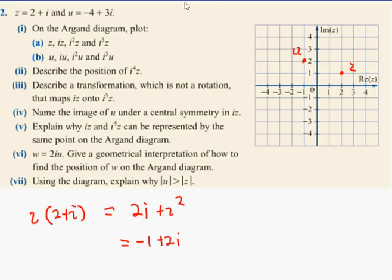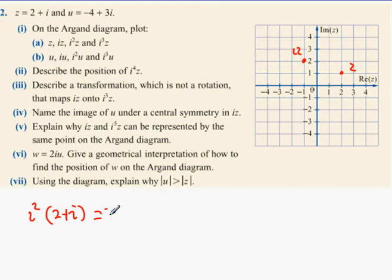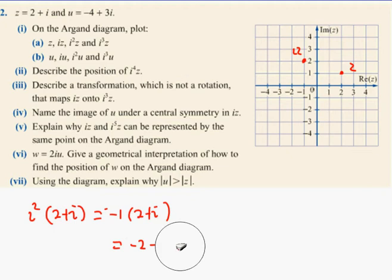Then we have to do I squared Z. I squared is, as we all know, minus 1. So it equals -1 times (2 + i), which is going to give me -2 - i. So minus 2 minus i, which is located here.